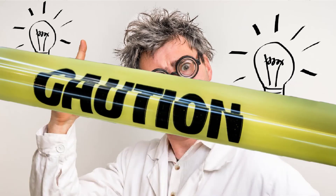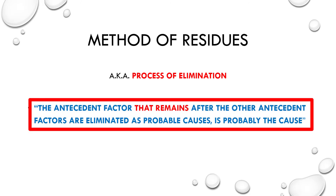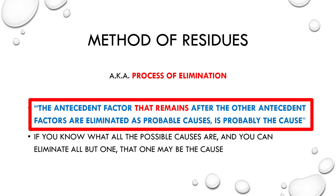Finally, method five is the method of residues, also known as process of elimination. The principle states: the antecedent factor that remains after the other antecedent factors are eliminated as probable causes is probably the cause. If you know all the possible causes and can eliminate all but one, that one may be the cause. This is essentially the same as inference to the best explanation, which we've looked at before. Next time we're going to take a look at historical science, and we'll probably introduce some mistakes in causal reasoning.